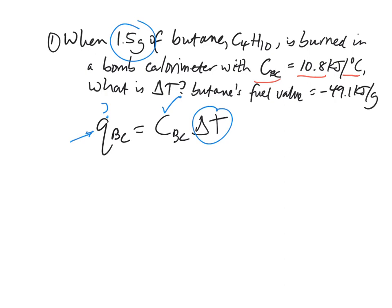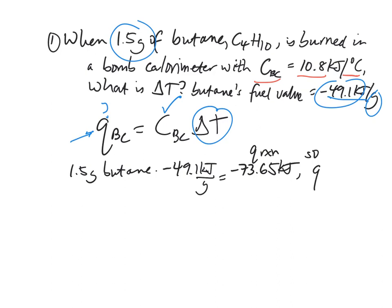And the way to find that is it has this fuel value written over here. That is, every gram of butane gives off 49.1 kilojoules. So if I burn 1.5 grams of butane, and each gram gives off 49.1 kilojoules, then I have 1.5 times 49.1 kilojoules, which is right around 73.65 kilojoules being released. That's what this negative symbol means. Remember, that's q of my reaction. So q of the bomb calorimeter is the opposite of that. Remember, it has to always be positive, positive 73.65 kilojoules. So it's absorbing all the energy that the butane is giving off.